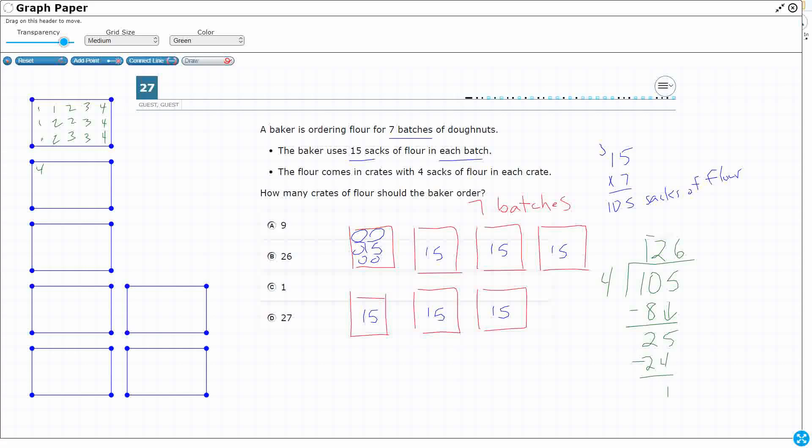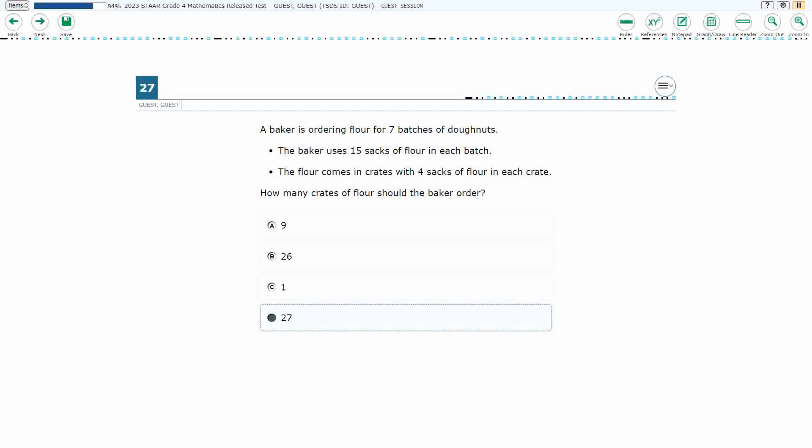So 26 crates, 26 times four, that's only going to get me 104. I need 105. So I'm going to need that extra crate. So my answer here is actually going to be D, 27.